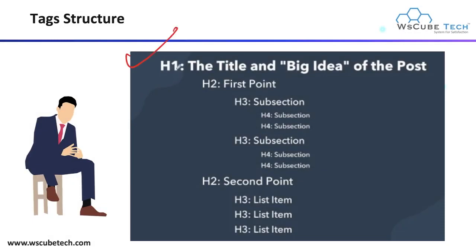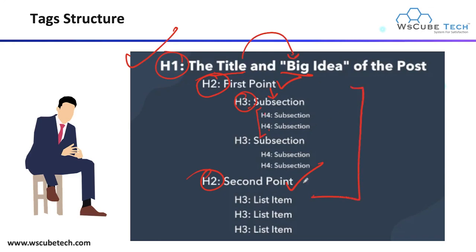Now, this is the tag structure. Your title, which represents the big idea of the post, goes in your H1 tag. After that, your first point goes in the H2 tag, and your second point also goes in H2. Then you have a subheading of that, which goes in your H3 tag. For H3, you can take a subheading in your H4 tag. This way, you can create your tag structure and write your post accordingly.